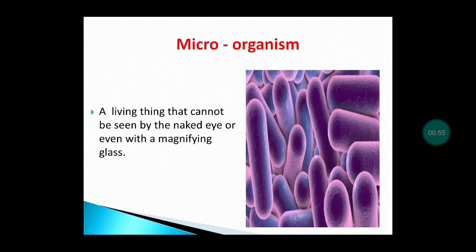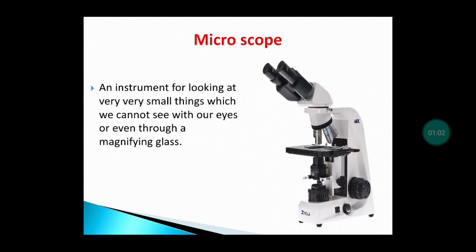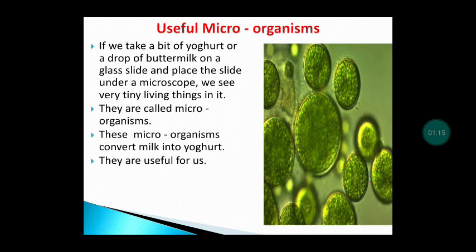A microorganism is a living thing that cannot be seen by the naked eye or even with a magnifying glass. A microscope is an instrument for looking at very small things which we cannot see with our eyes or even through a magnifying glass.